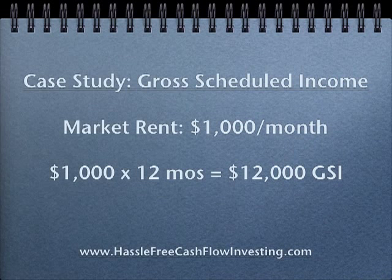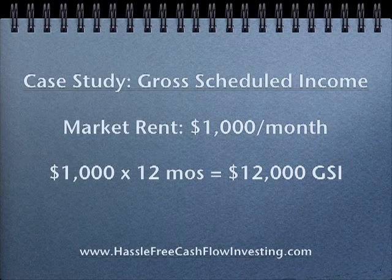Let's do a case study. For gross scheduled income, let's assume the property could rent for $1,000 a month. You take the monthly rent times 12 to get the annual number. All of the incomes we're talking about in this lesson are annual numbers. So we're looking at $12,000 of gross scheduled income.